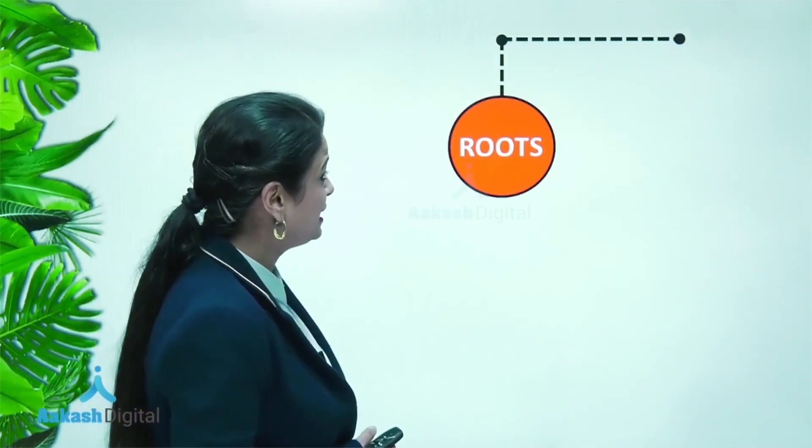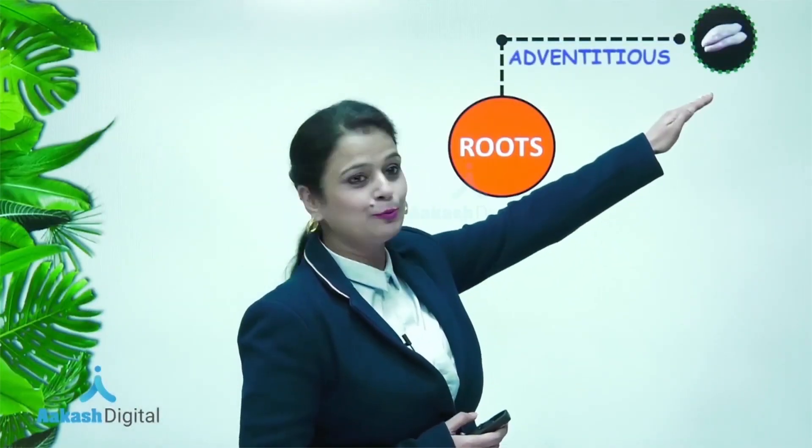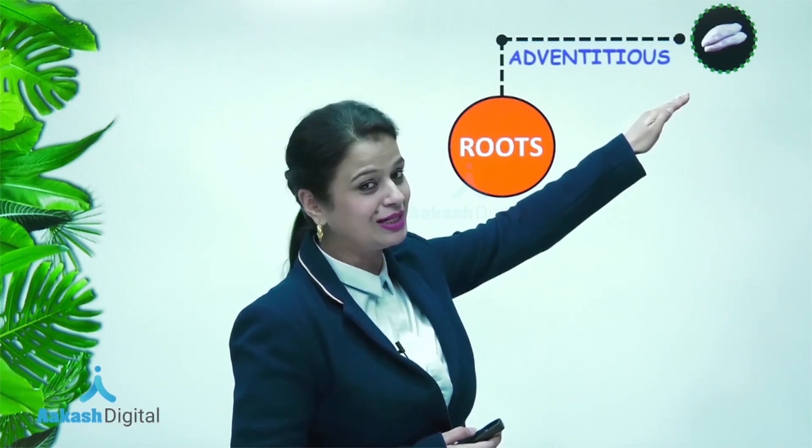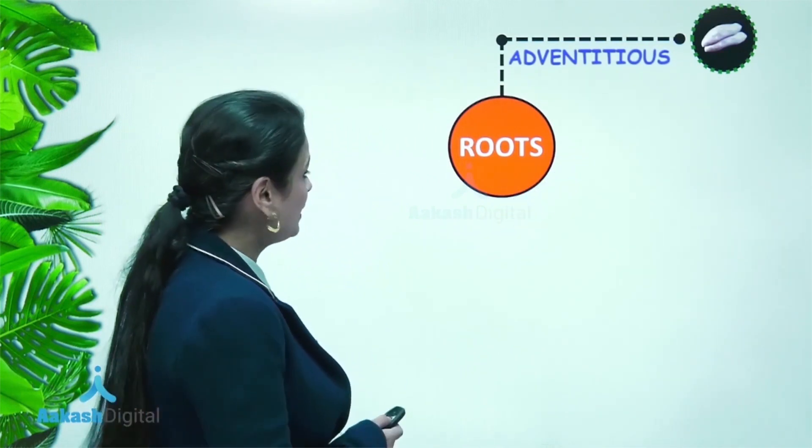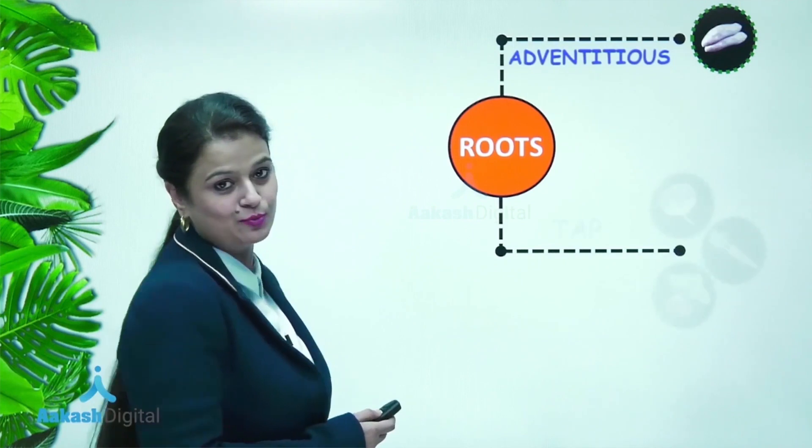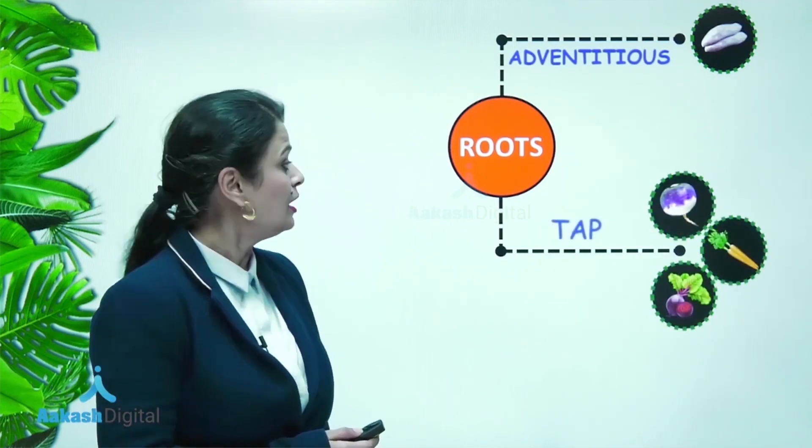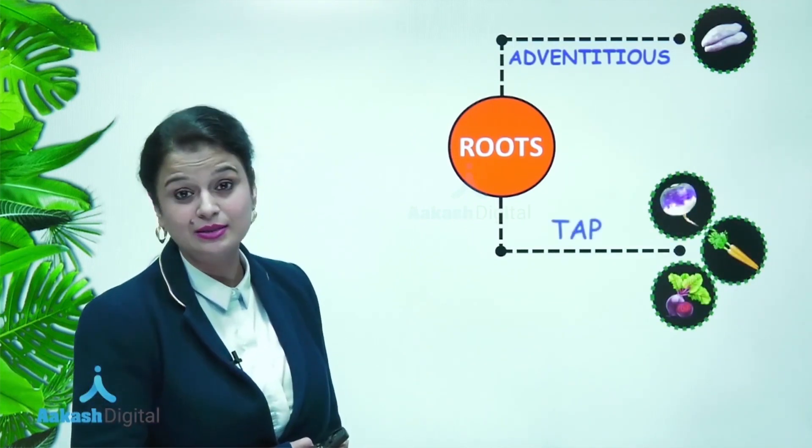We have learnt here that in sweet potato, the part which is involved in the storage of food is adventitious root, but in the rest all, there is modification of tap root.